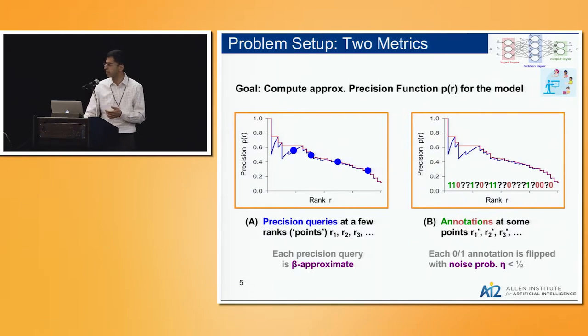There'll be some question marks because I won't have money to annotate all of them. The question will be, how many of these green and red annotations do I need? We'll assume there's some error probability, so each one or zero flips with probability some small eta. I'll not talk about beta and eta anymore, but they are in the paper.